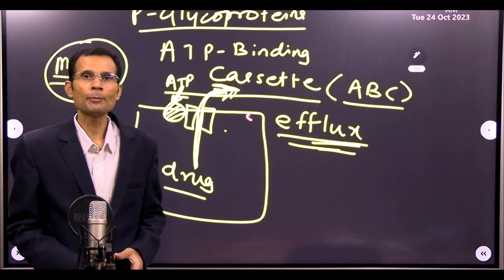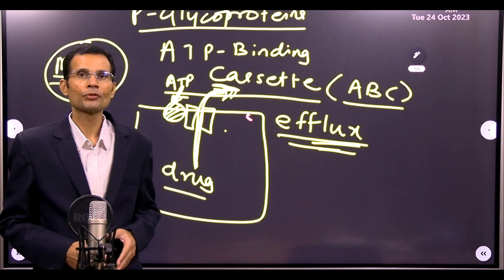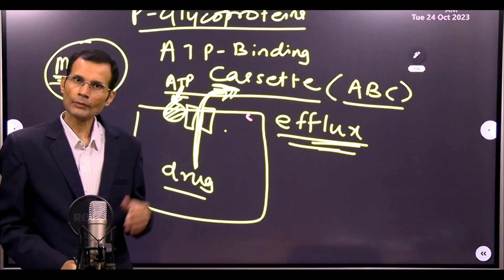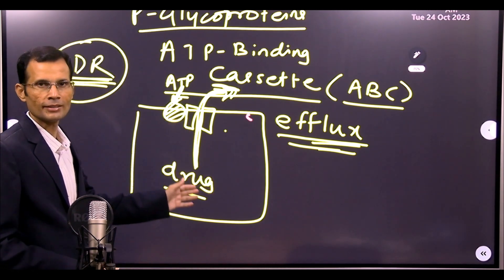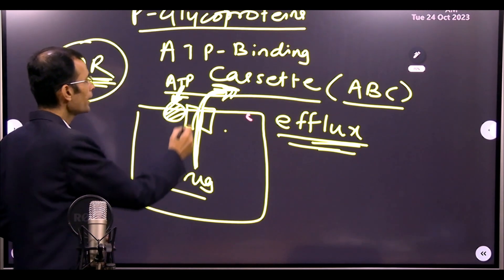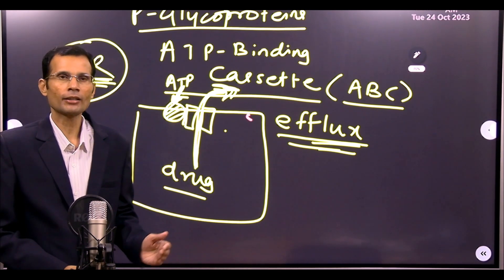In this case, there is a type of ABC transporter which is MDR, multi-drug resistance transporter. The mechanism is this: the ATP will bind to one part and then the other part will act as a channel, efflux channel.